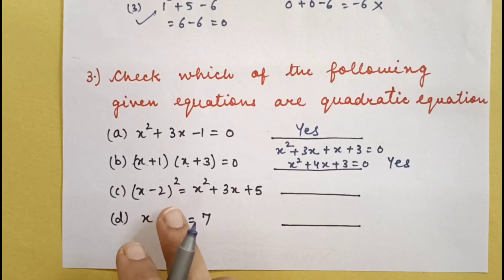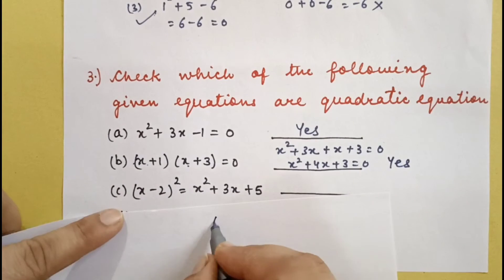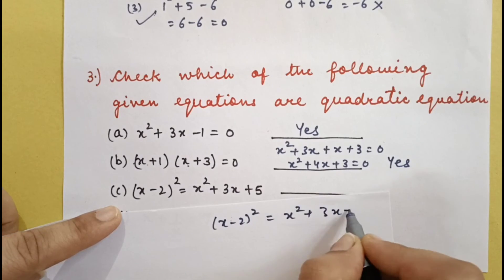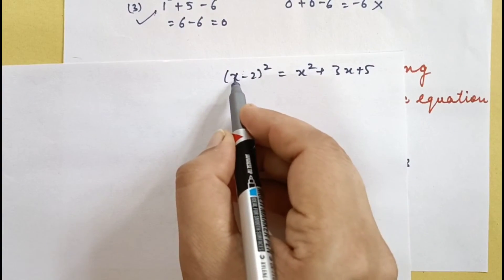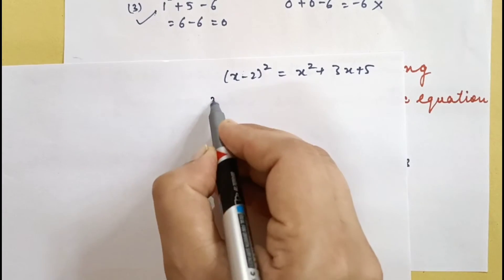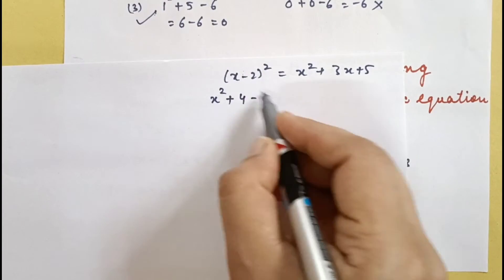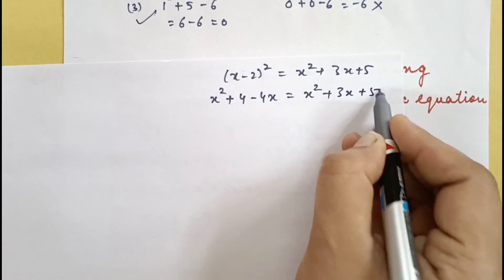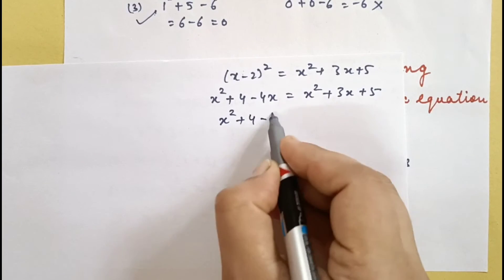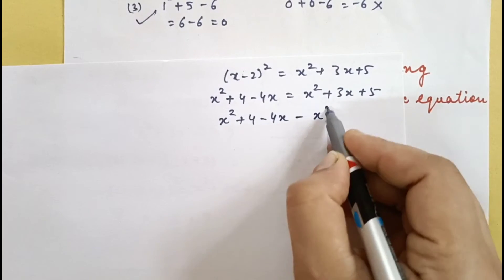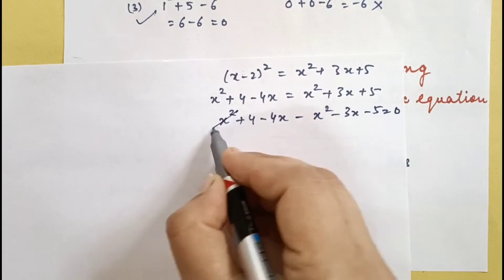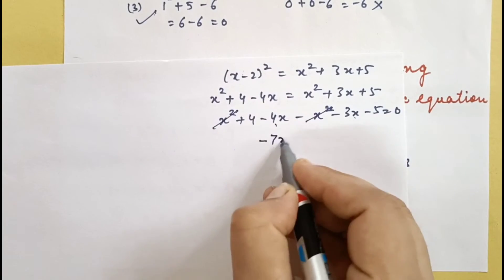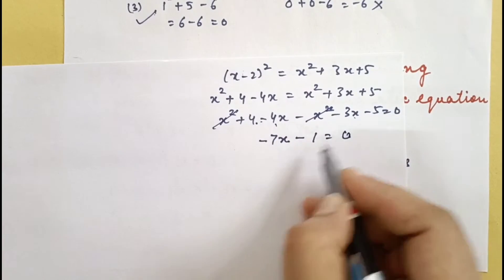Next part: (x − 2)² = x² + 3x + 5. Solving the left-hand side using the (a − b)² formula: x² − 4x = x² + 3x + 5. Bringing right-hand side terms to the left: x² cancels, −4x − 3x = −7x, minus 1 = 0. So this gives −7x − 1 = 0, which is linear, not quadratic.